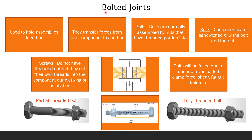We will discuss about the bolted joints and their principles. These bolted joints are mainly used to hold the assembly together and these joints will transfer the forces from one component to another component, as you can see in this figure. There are mainly two types: bolts and screws.